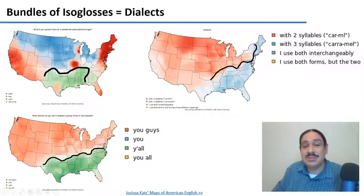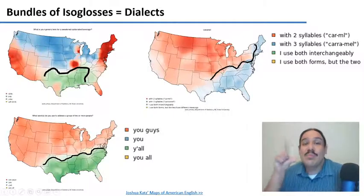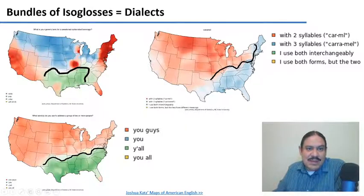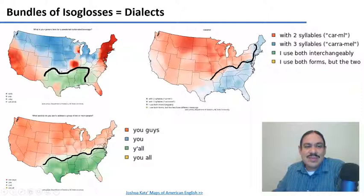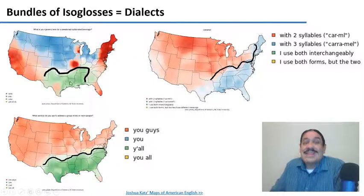This is a bundle of isoglosses. As you can see, they're not exactly the same, but they run through similar places — Mississippi and Louisiana are always on one side of this bundle. When you have a bundle of these regional features, we can say that we have a dialect on one side versus the other. So the Southern dialect of American English has some common features: calling it a Coke, saying 'caramel' with three syllables, and saying 'y'all.' The collection of these features helps you draw the isoglosses to define the geographic extension of the dialect and identify someone as speaking Southern American English.